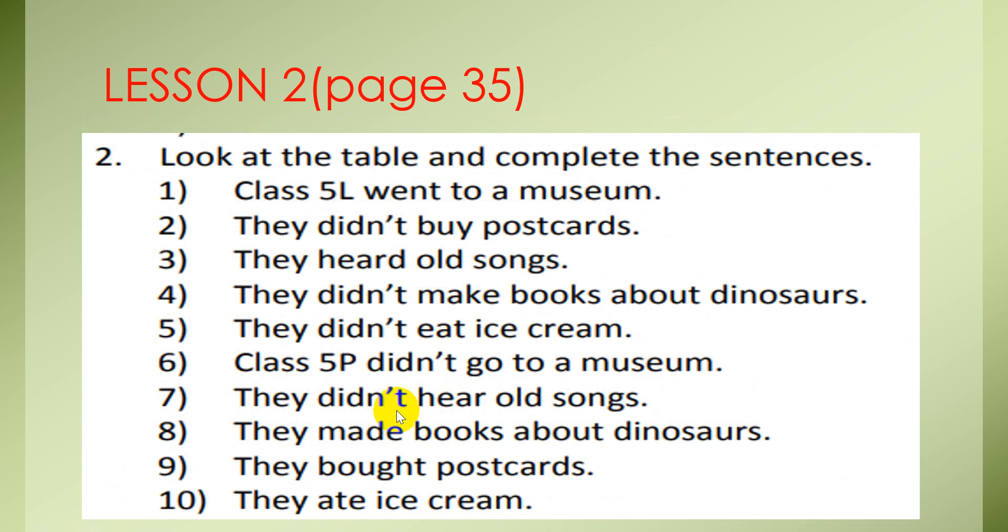Now, read together. You look carefully. Number 1, class 5L went to a museum. Number 2, they didn't buy postcards. Number 3, they heard old songs. Number 4, they didn't make books about dinosaurs. Number 5, they didn't eat ice cream. Number 6, class 5B didn't go to a museum. Number 7, they didn't hear old songs. Number 8, they made books about dinosaurs. Number 9, they bought postcards. And number 10, they ate ice cream. It's okay.